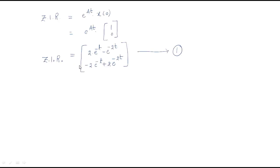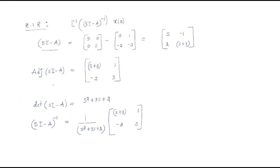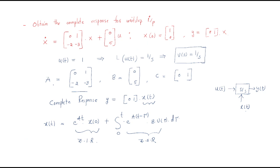Hello everyone. In the last session we discussed the zero input response. In this session we will discuss the zero state response. In a typical problem, the zero input response is given as e^(A·t)·x(0).